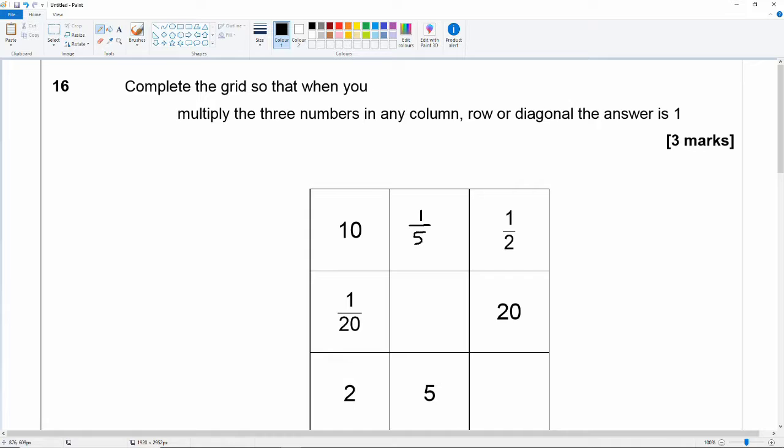Okay so 1 20th multiplied by 20 is already 1. So the only thing that I can do is multiply by 1 to keep it as 1.